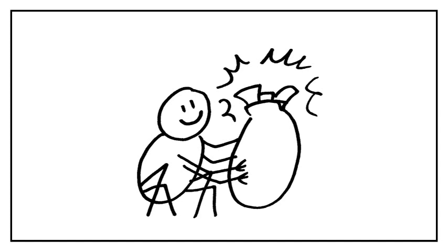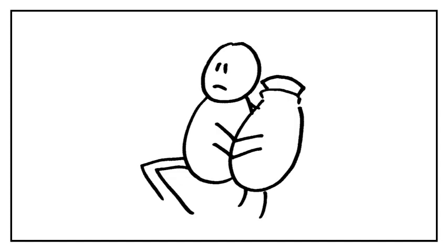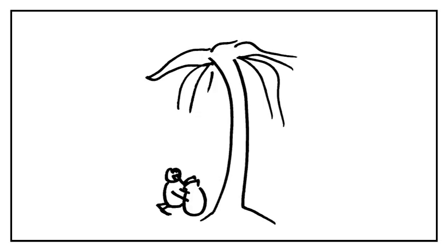This, however, led to a new problem. What if someone tried to steal all of his wisdom? Anansi couldn't have that, so he looked around for a safe place to hide the pot. He came to a giant tree and decided it would be a great hiding place.